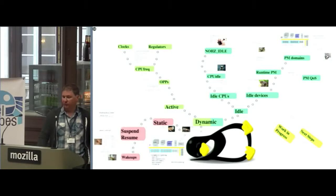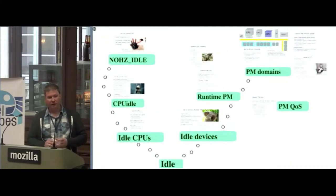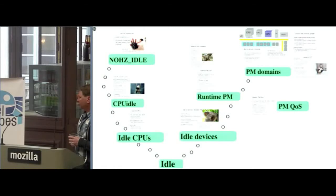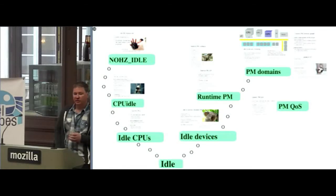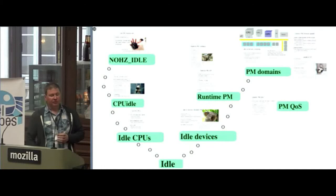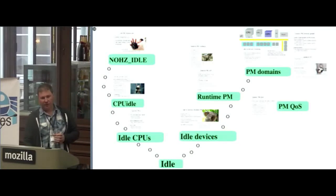DVFS — frequency and voltage scaling — is the main part of active power management. Now let's hit idle power management, because this is where most of the interesting work is happening as hardware evolves. One thing to notice is there are actually different frameworks for managing idle in CPUs versus managing idle in devices. This is more of a Linux evolution than intelligent design problem — we had frameworks for idling CPUs before the hardware gave us the capability or need to manage idle devices in the kernel. The idle device support is a much more recent evolution, and that's why they evolved differently. There are some efforts to merge these, which I'll talk about later.